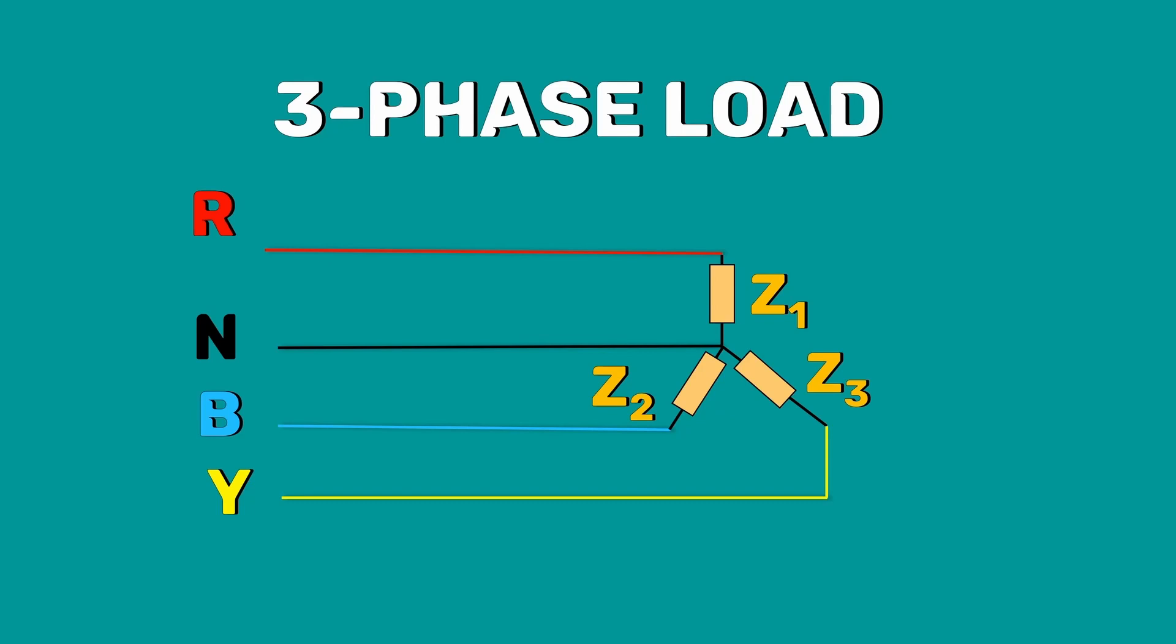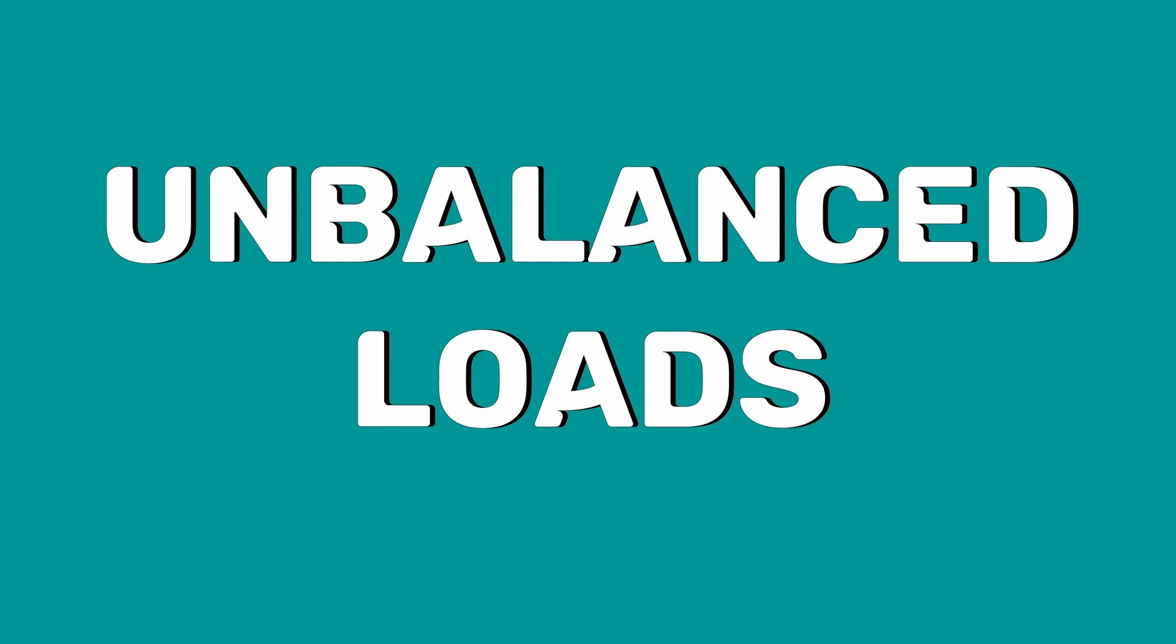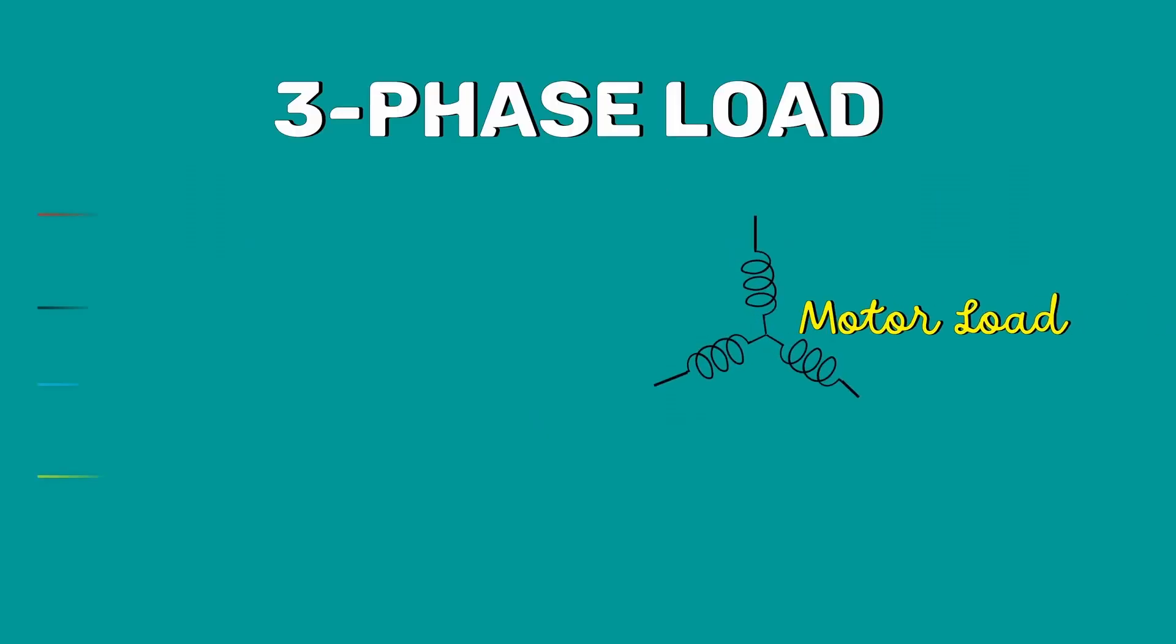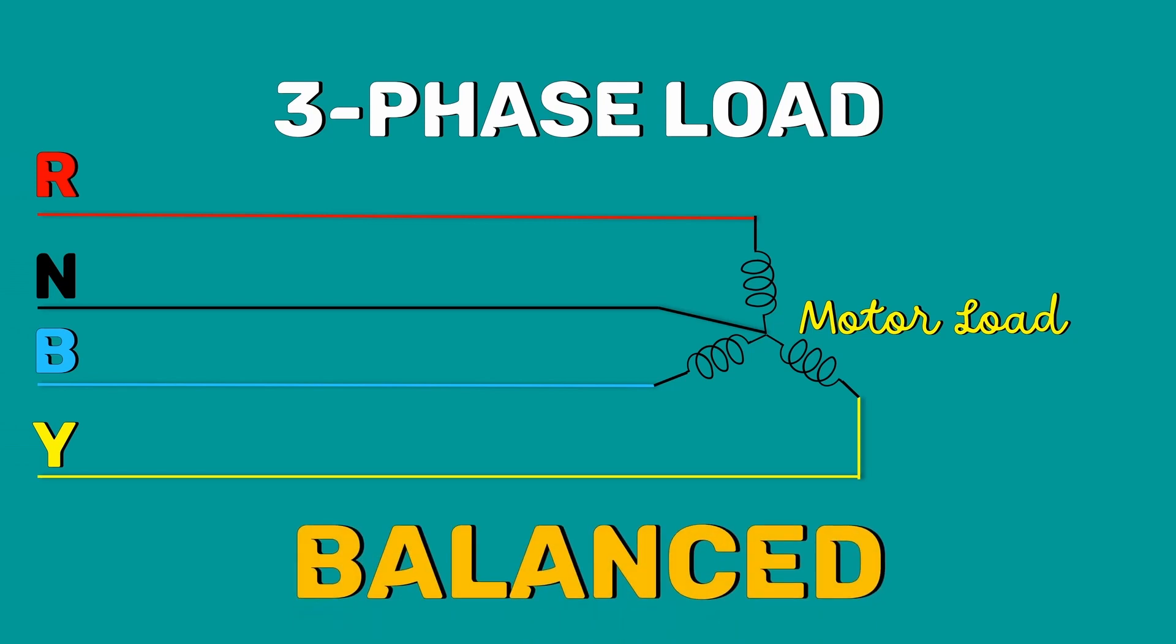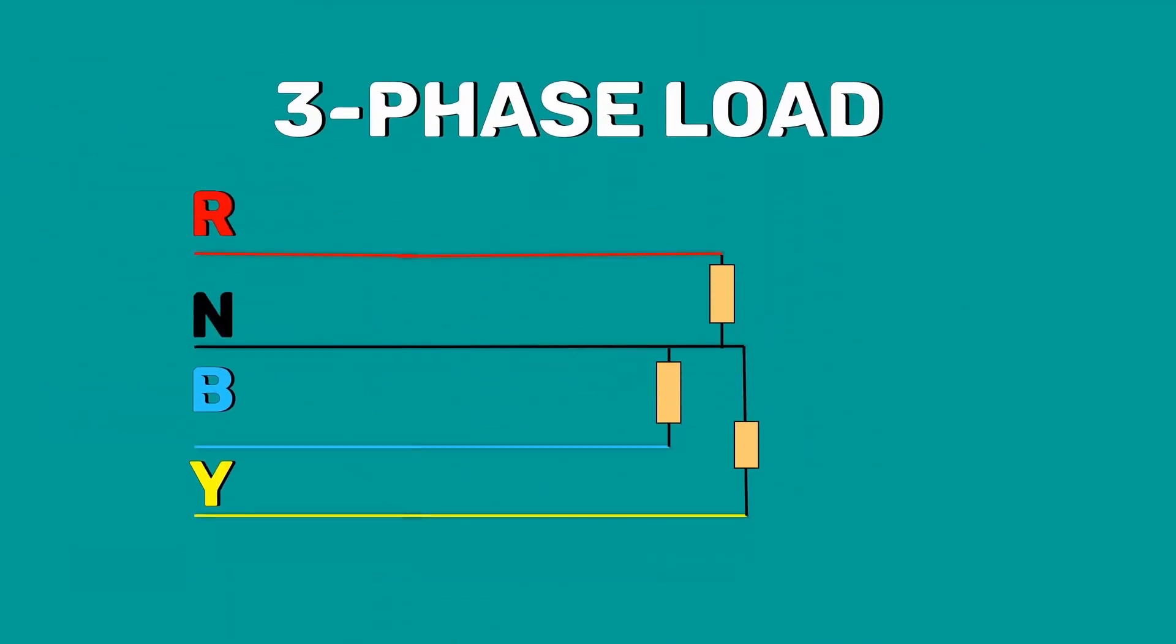The three phase loads that have different impedance in each phase are called the unbalanced loads. Usually, the three phase motor loads connected to the supply are balanced, but when we add single phase loads, the balance is lost.